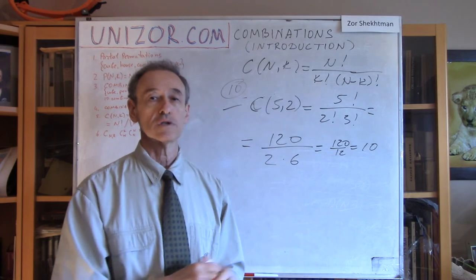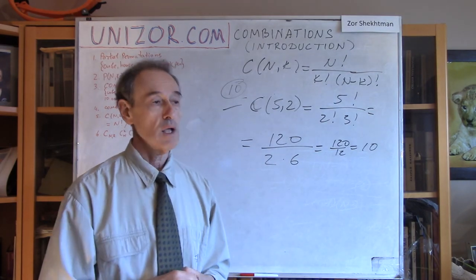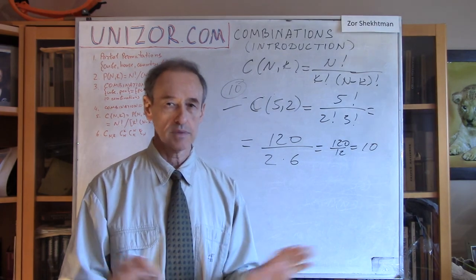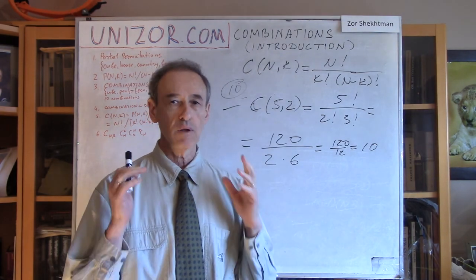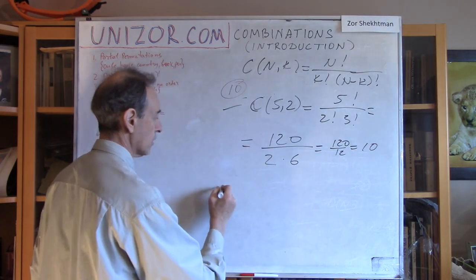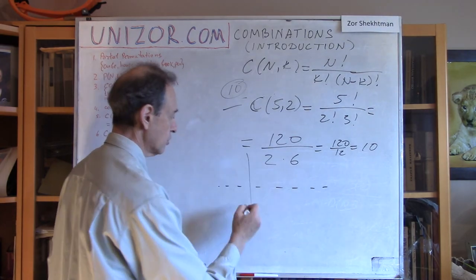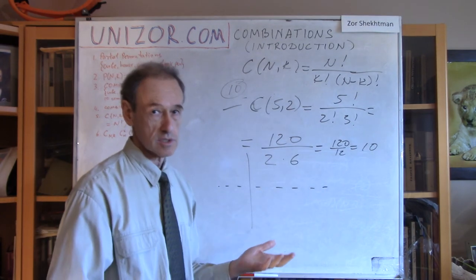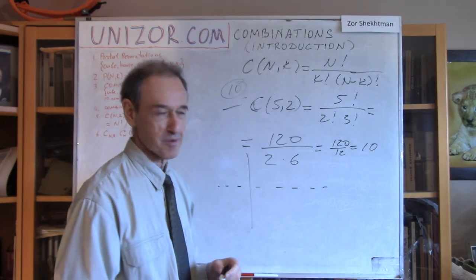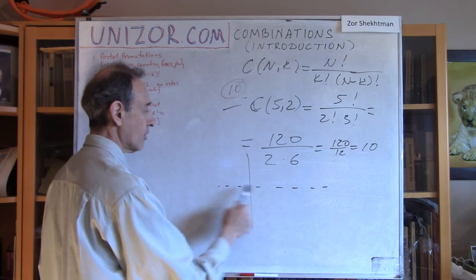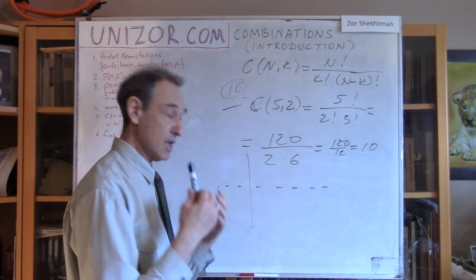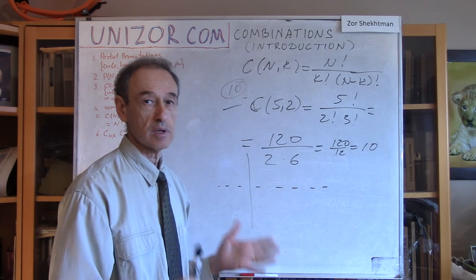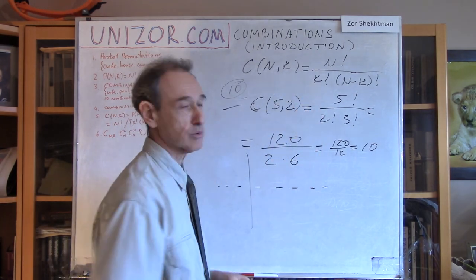Well, that's it for today — just an introduction into what combinations are. Don't forget the formula and its properties. Actually, disregard that: you can forget the formula as long as you remember the logic — put objects in a certain order, separate k from n minus k, and say that n factorial should be divided by k factorial and n minus k factorial to get the number of combinations, because all permutations within each group produce exactly the same subset.